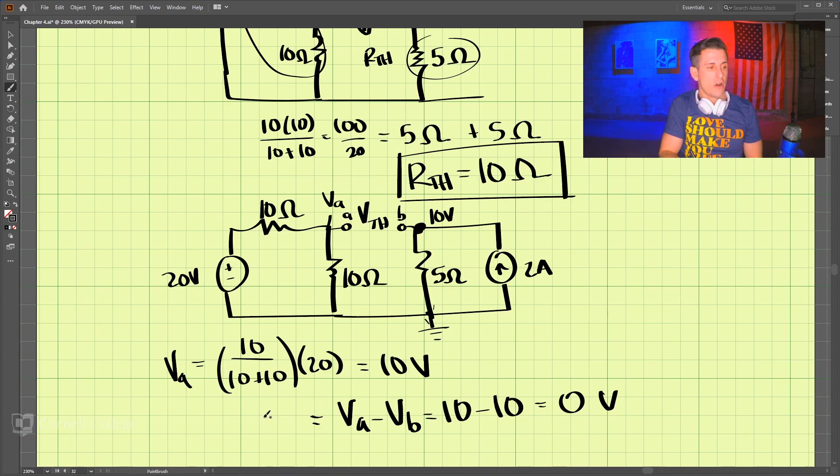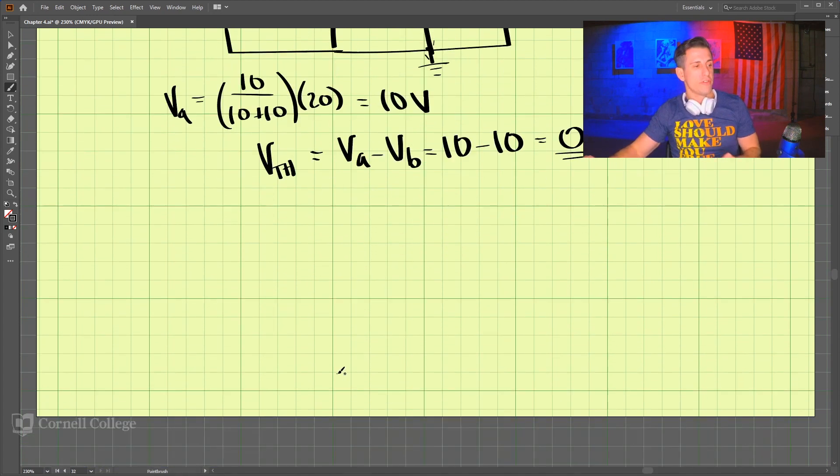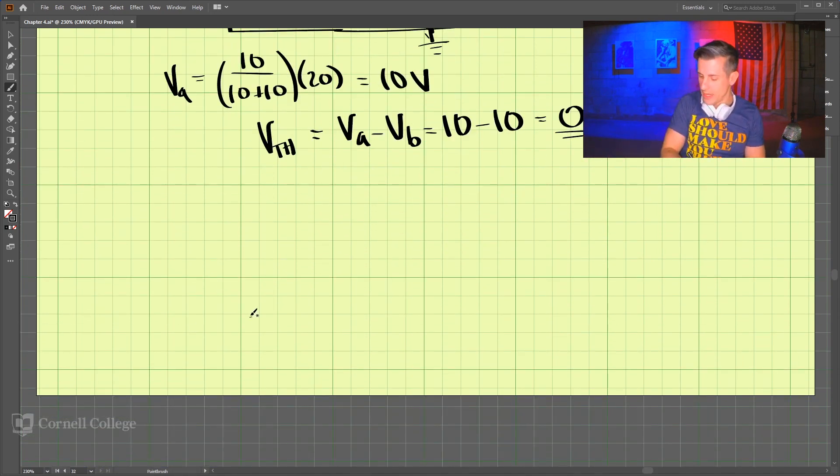So that is our Thevenin voltage here, 0 volts. So let's draw the circuit one more time. What we have is nothing more than a zero volt voltage source in series with a 10 ohm resistor. And in this problem,